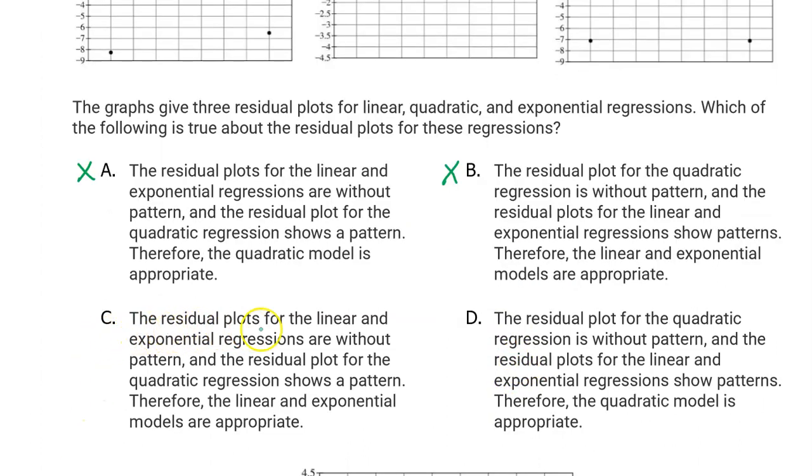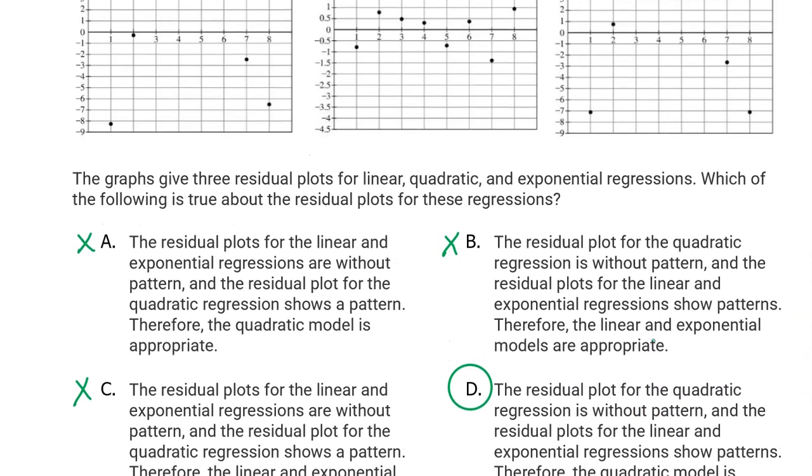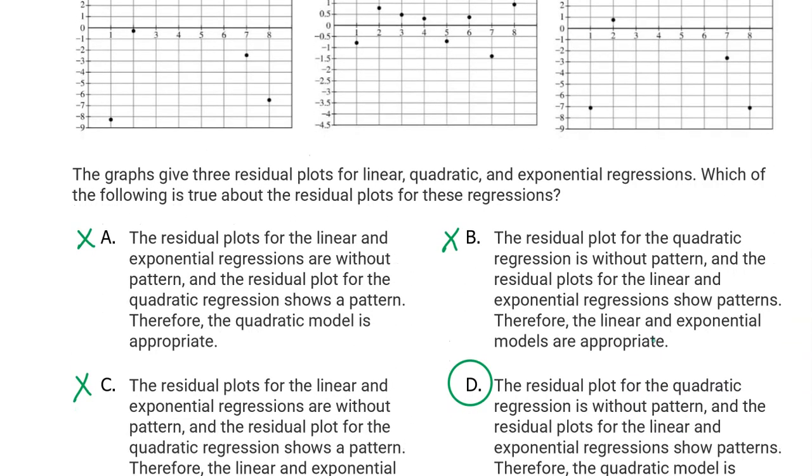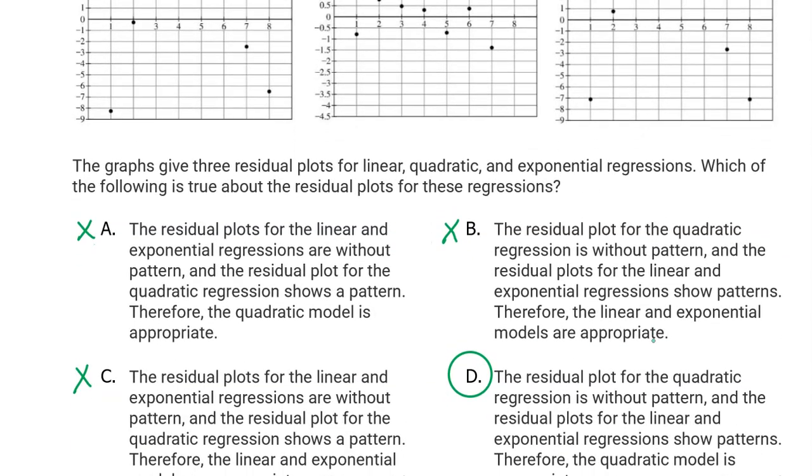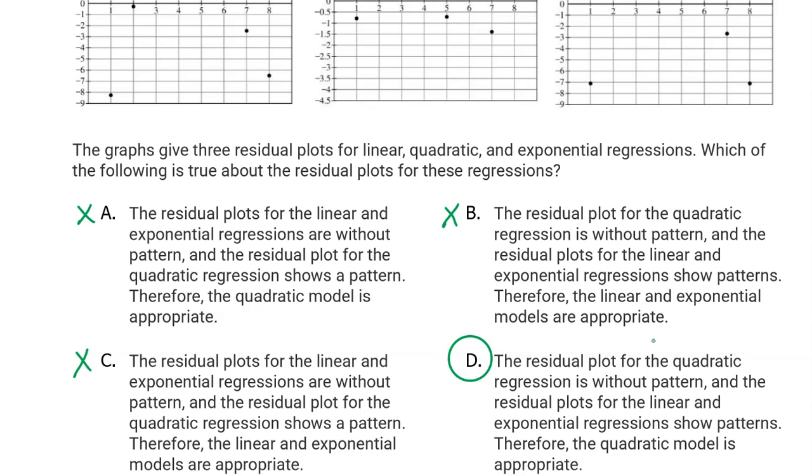The good one is going to be the one with no pattern. The residual plot that shows no pattern is best. Option C. The residual plots for the linear and exponential regressions are without pattern. That's already wrong. Hopefully, D is going to be correct. I'm going to go ahead and circle it on faith, and then now I'm going to read it. The residual plot for the quadratic regression is without pattern. Yep. And the residual plots for linear and exponential regressions show patterns. Indeed, they do. Therefore, the quadratic model is appropriate. That's correct.